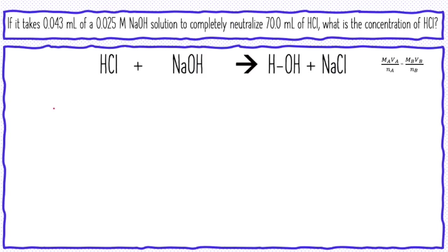Let's go ahead and do an example calculation for a titration. The problem: if it takes 0.043 milliliters of a 0.025 molar sodium hydroxide solution to completely neutralize 70.0 milliliters of hydrochloric acid, what is the concentration of the hydrochloric acid? No matter which method I use — stoichiometry or the modified dilutions equation — I need a balanced chemical equation. Always make sure equations are balanced, and if they're not given to you, write them out and balance them yourself.